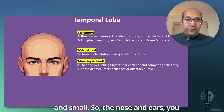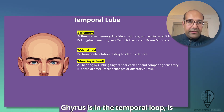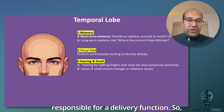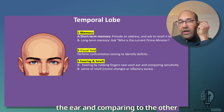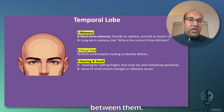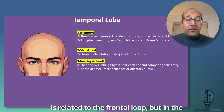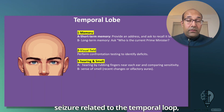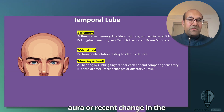Hearing and smell correspond to the nose and ears on the patient's face. Heschl's gyrus in the temporal lobe is responsible for auditory function, so we test hearing by rubbing fingers beside each ear and comparing sides. For smell, although it relates to the frontal lobe, temporal lobe seizures can produce olfactory aura or a recent change in smell.